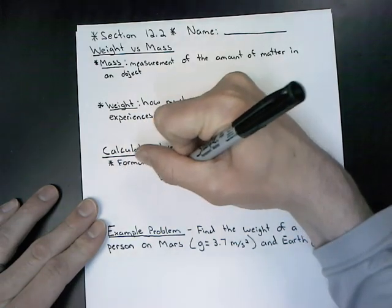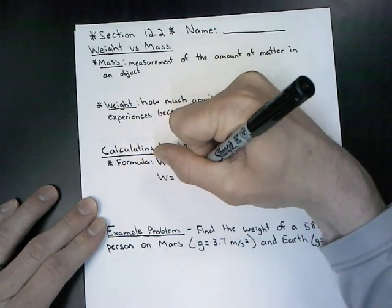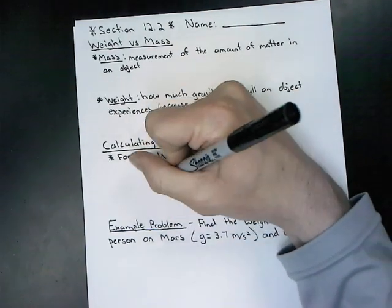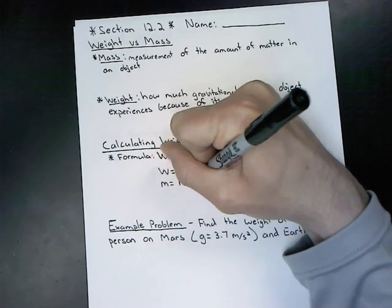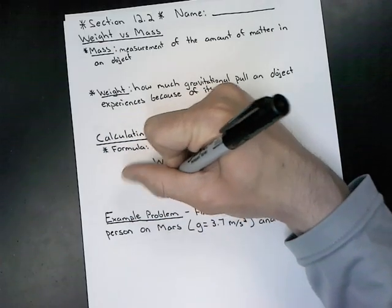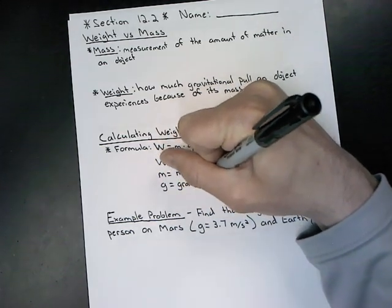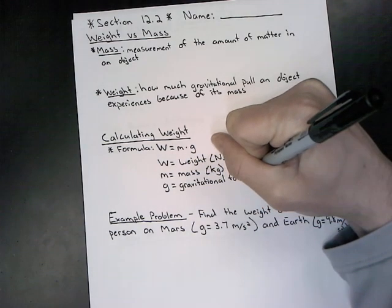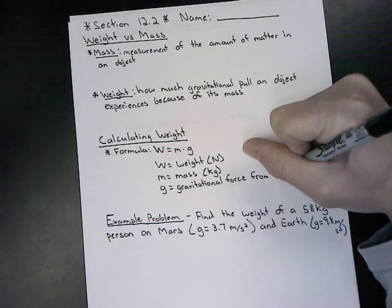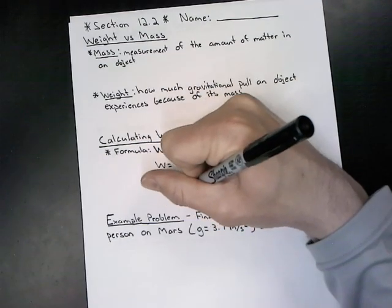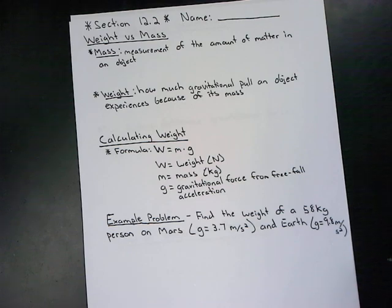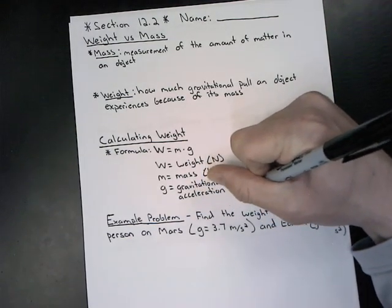The W is going to be weight, and in this class we are going to express weight in Newtons. The M is going to be the mass of that particular object, expressed in kilograms. And then G is going to be the gravitational force from free fall acceleration, with units of meters per second squared.